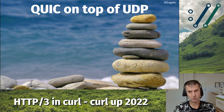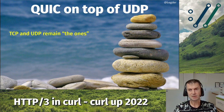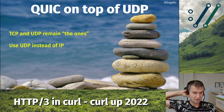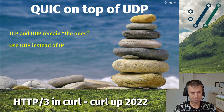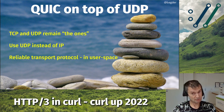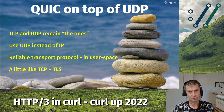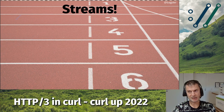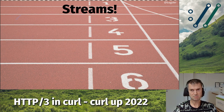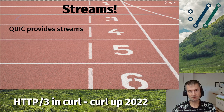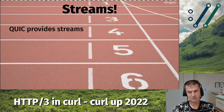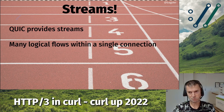QUIC is a replacement for TCP and TLS, built on top of UDP — treating UDP essentially as if it were IP. It's a reliable transport protocol implemented in user space, sending UDP packets, combining TCP and TLS functionality in a single protocol on top of UDP. Because it's a new transport protocol, streams are built into QUIC itself, not in the HTTP layer — the transport protocol provides many logical flows within a single physical connection.